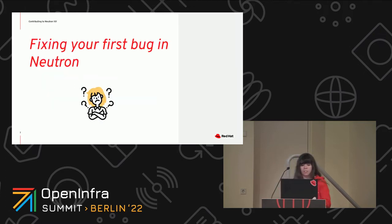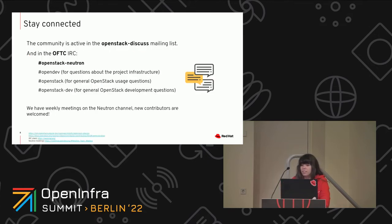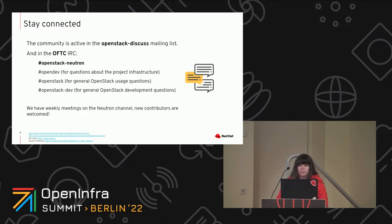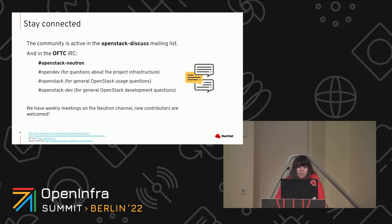So let's go to the nice part: how to fix your first bug in Neutron. The first thing is to stay connected. No one expects you to know how to do everything related to Neutron if you've never played with the code base before. It's really important to be on the OpenStack Discuss mailing list and in the IRC channels. In OpenStack Neutron you'll find all the reviewers and contributors who will try to answer your questions. We also have weekly meetings on the Neutron channel, so don't hesitate to join.